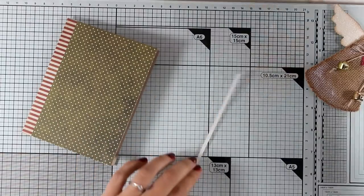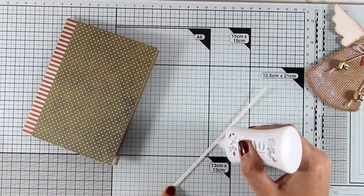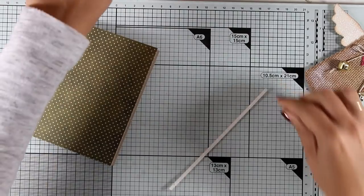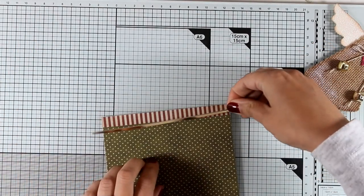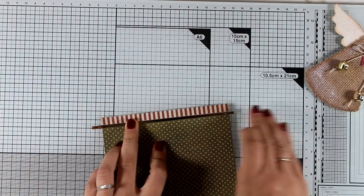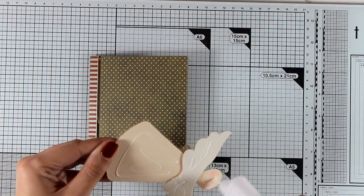Now since I have gold jingle bells on top of my angel I am going to add a golden detail on top of my card base as well. So I have this thin strip of gold cardstock. Now all that's left to do is to stick the angel on top of my card.